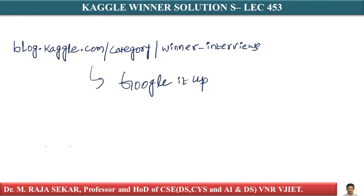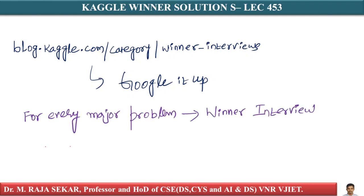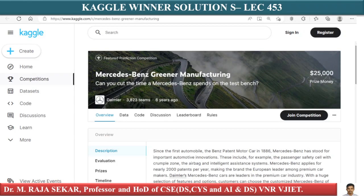You can reach this page by Googling it up. Just go to Google and search for Kaggle Winner's Interviews. If you just Google for it, you can find Winner Interviews. On this particular page, one thing you quickly notice is that for every major problem, there is actually a Winner's Interview. For example, you can go to a problem — let's go and see the first place Winner's Interview.